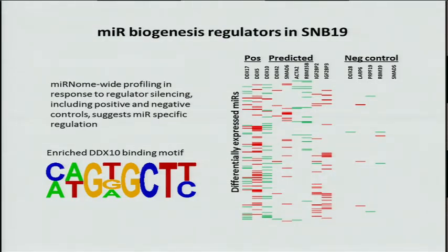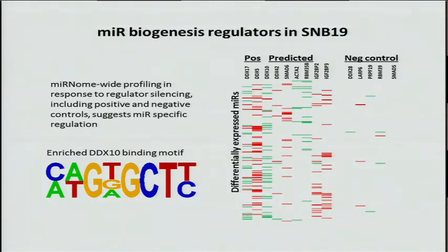Looking at an even higher throughput approach, we measured the response of about 800 microRNAs to silencing of predicted biogenesis regulators. What you see in the heat map on the right — every row describes the response of a single microRNA to silencing of every one of the genes listed at the top. We selected two positive controls, DDX5 and DDX17, predicted to downregulate microRNA biogenesis in glioblastoma cell lines and also well-known biogenesis regulators.